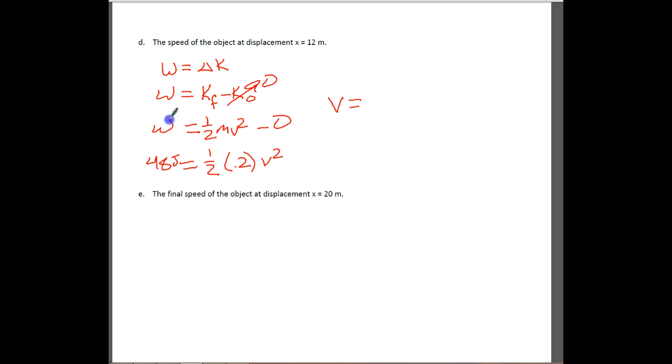So we're just going to plug all this in here again. And we've got v is equal to the square root of 2 times 48, so we're just rearranging this equation, divided by 0.2. And we end up with our speed, which is 22 meters per second.